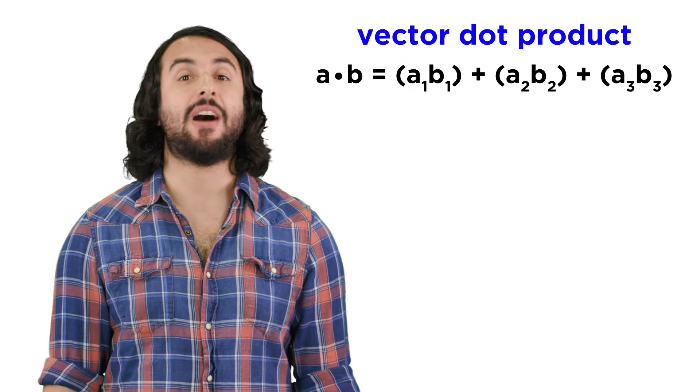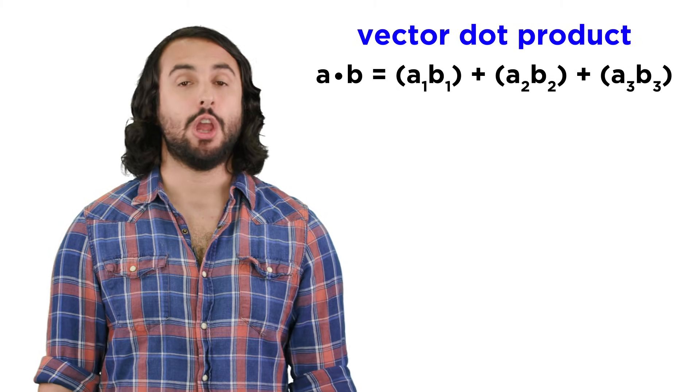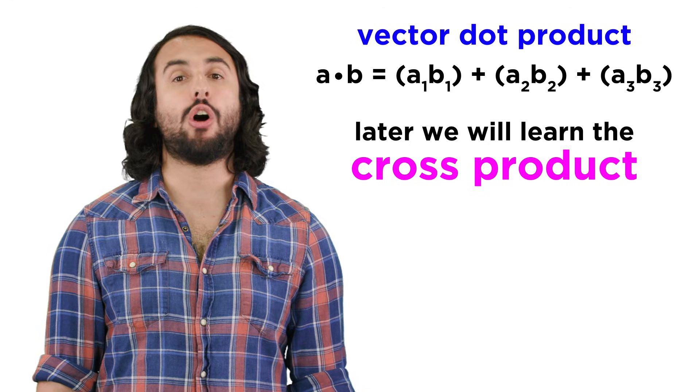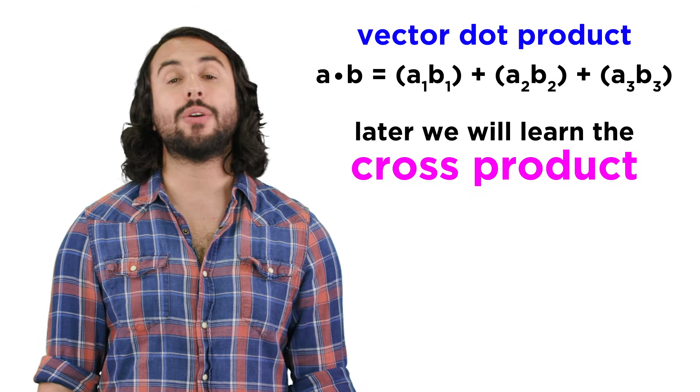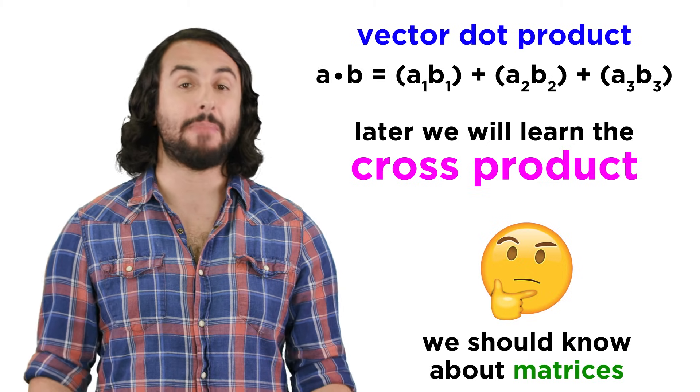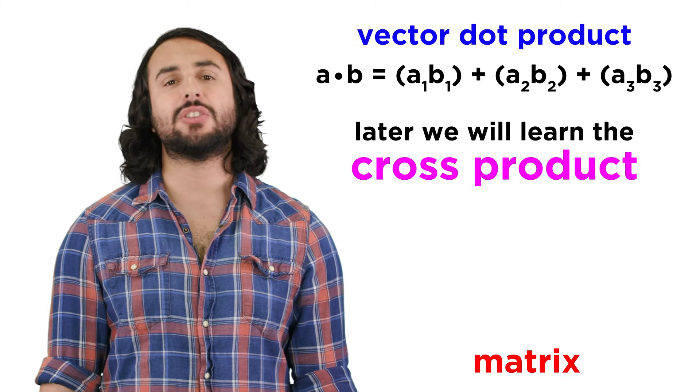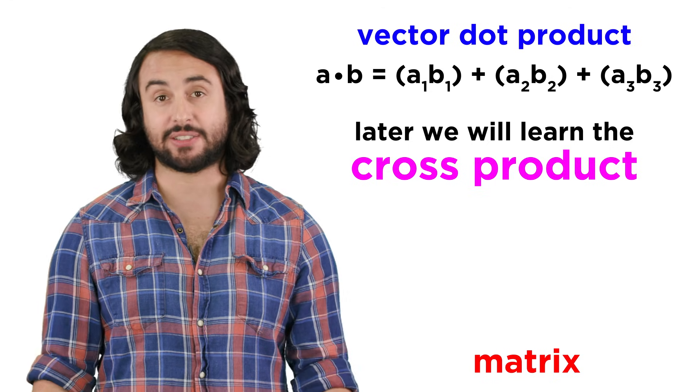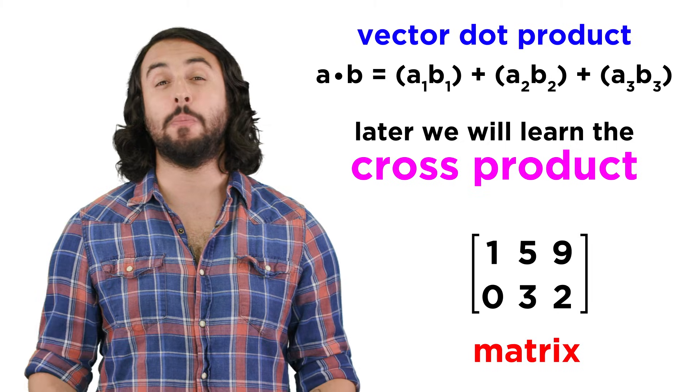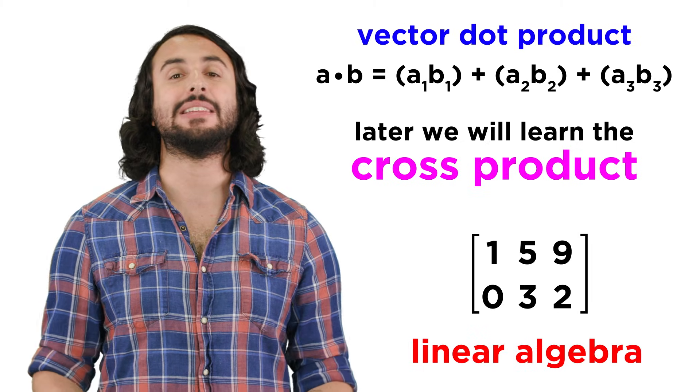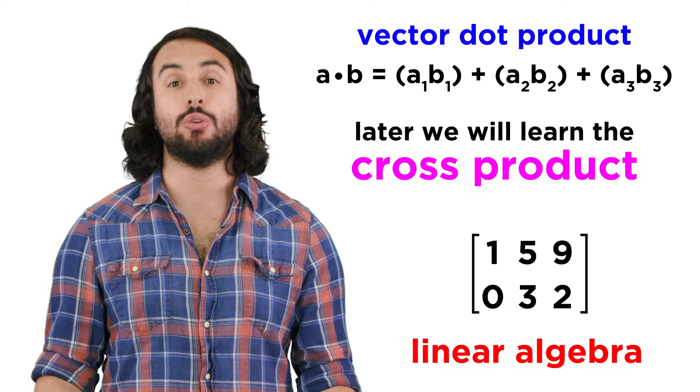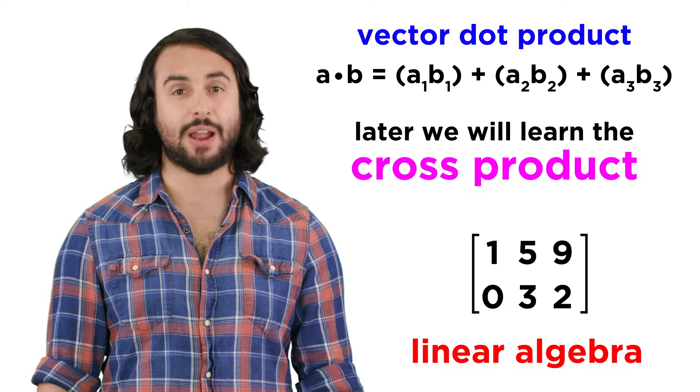So that's what we need to know about vector dot products, which represent one way that vectors can be multiplied. The other way, called the cross product, is more complicated, and one interpretation will require that we understand how to use matrices. Matrices are the plural of the word matrix, which apart from being a super cool science fiction movie, is a construct that is ubiquitous in the study of linear algebra. So let's move forward and begin to study this new subject. But before doing so, let's check comprehension.